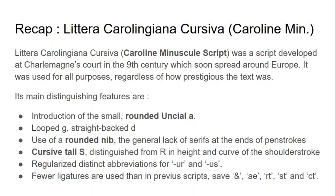Before we do Proto-Gothic script it's worth looking at Littera Carolingiana Corsiva, or Caroline Minuscule script. Caroline Minuscule was a script developed at Charlemagne's court in the ninth century and it soon spread around Europe. It was used for all sorts of purposes regardless of how prestigious the text was, and its main distinguishing features are the introduction of a small rounded uncial A, a looped G, and a straight-backed D.